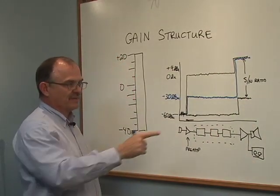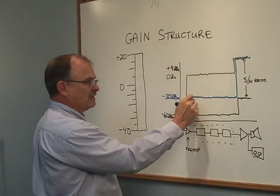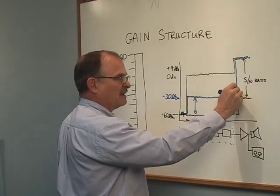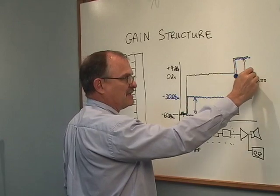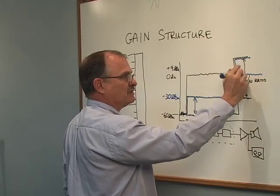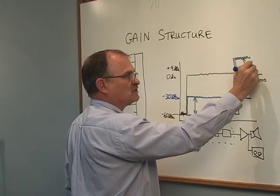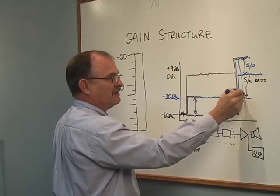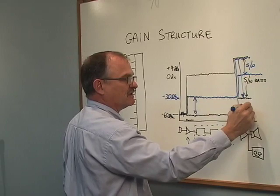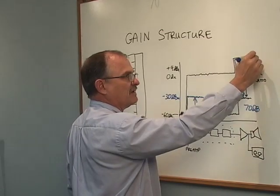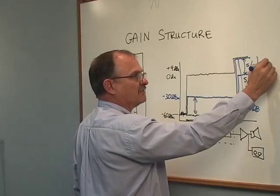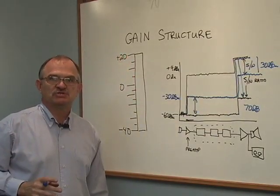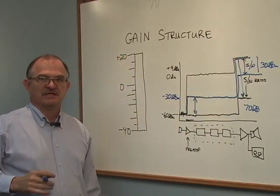And then you still have to amplify it to your required sound pressure level up here. But what happens to your noise? This difference here comes up with the amplifier. And now your signal to noise ratio is much worse. Instead of being say 70 decibels difference, you may end up with only a 30 decibel difference.